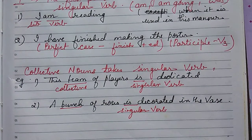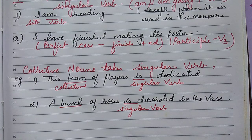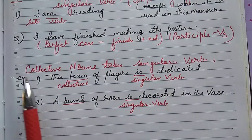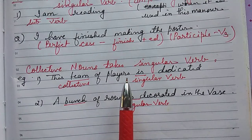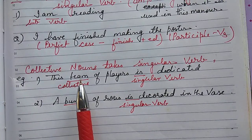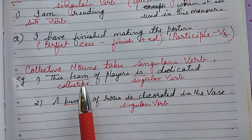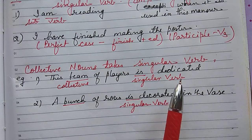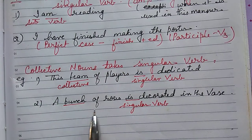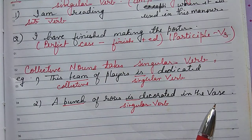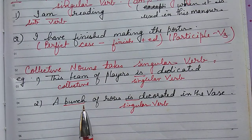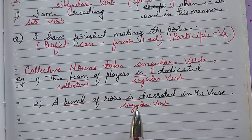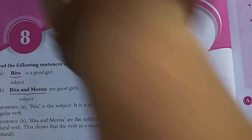Collective nouns are always taken as singular nouns and take a singular verb. For example, 'The team of players is dedicated' — 'team' is collective, treated as one unit, so we use 'is.' Similarly, 'A bunch of roses is decorated in the vase' — 'bunch' is again considered as one singular noun, so we use the singular verb 'is.'